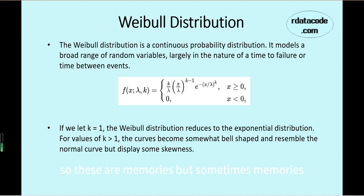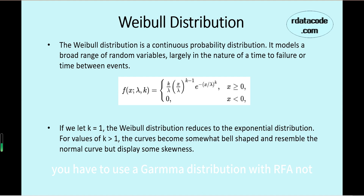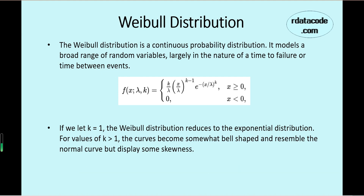Sometimes the memoryless character is not realistic. So if you want to relax this memoryless feature of exponential distribution, there are usually two distributions we can use. First, you can use a gamma distribution with alpha not equal to 1, for example alpha equal to 1.5 or 2. Another way is to use the Weibull distribution.